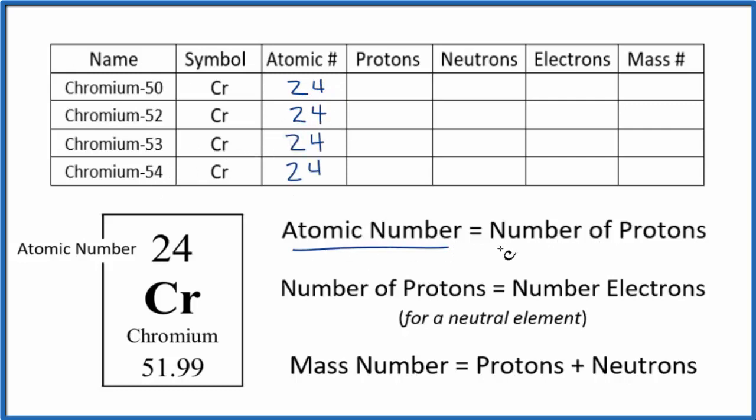The atomic number equals the number of protons. That's what the atomic number means. So for all these isotopes of chromium, they all have 24 protons.